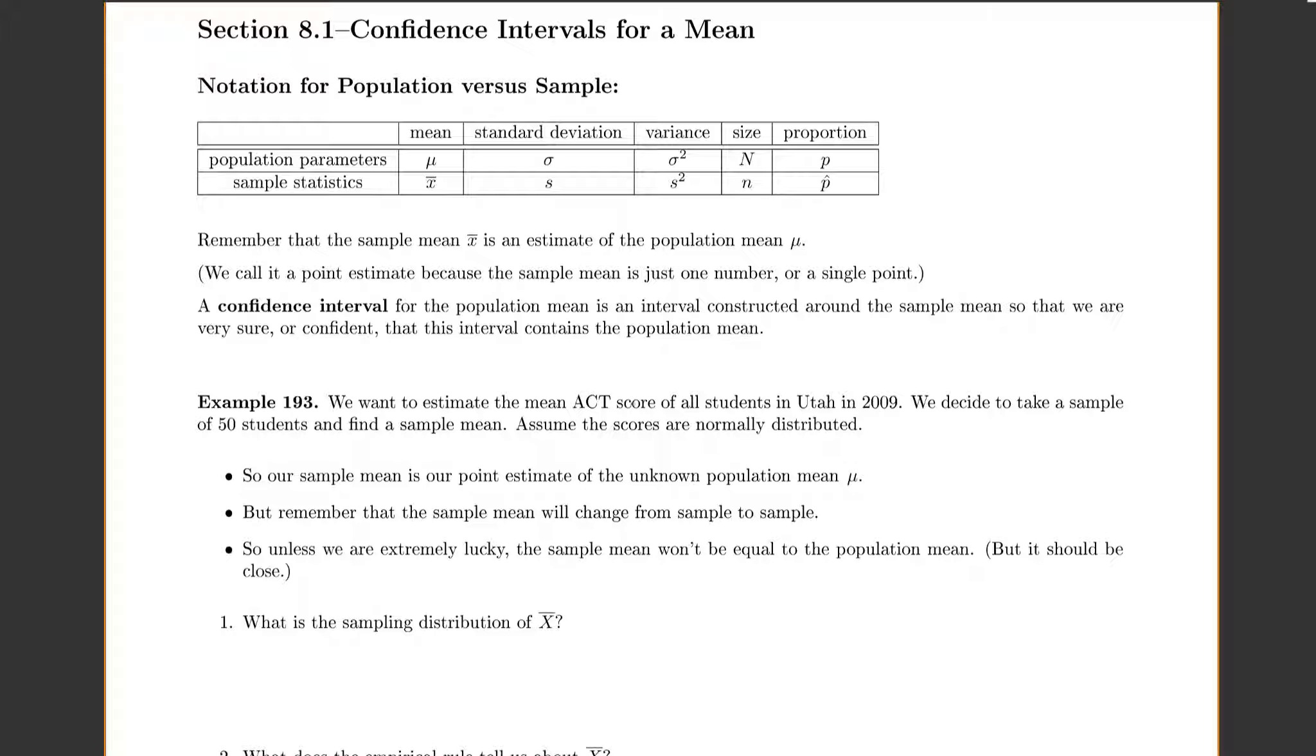So in this example we want to estimate the mean ACT scores for all the students in 2009. We decided to take a sample of 50 students and find a sample mean. Let's assume that the scores are normally distributed. So it tells us that we're normal and our sample size is 50. So our sample mean x-bar will be our point estimate of the unknown population mu.